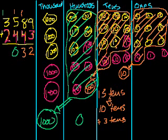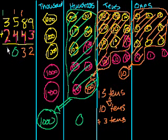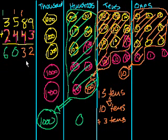And now we're almost done. How many thousands do we have? 1, 2, 3, 4, 5, 6,000. Or 1 plus 3 plus 2 is 6. So the answer is 6,032.